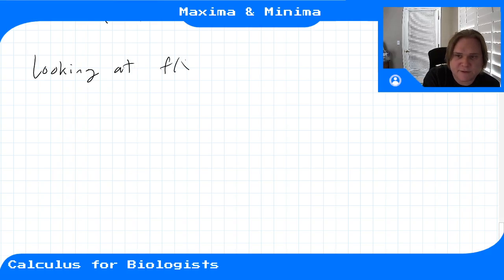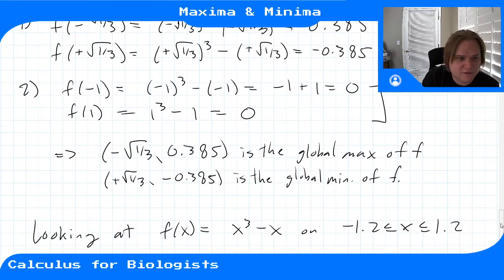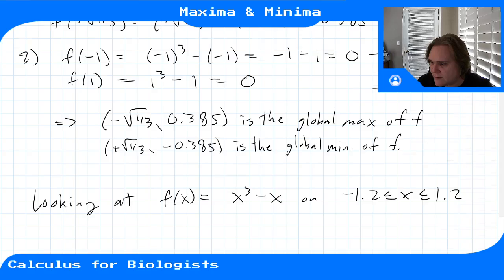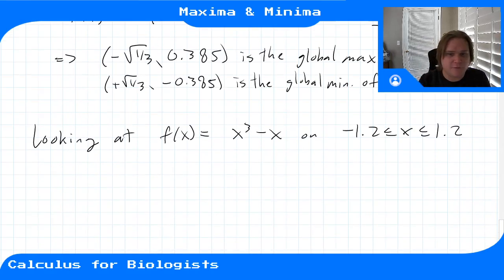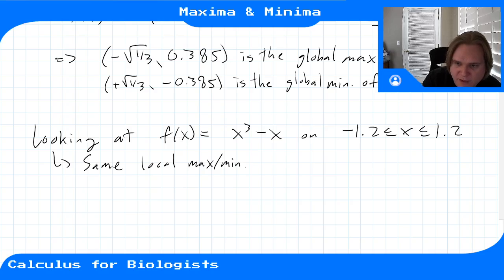On the interval [-1.2, 1.2] we still have the same local extrema and the same local properties, but we have new endpoints to check.